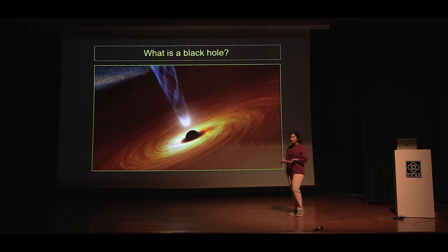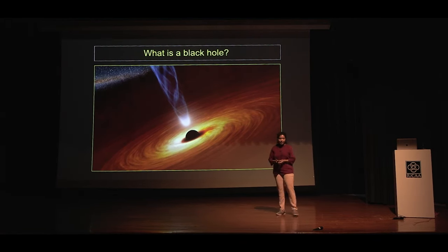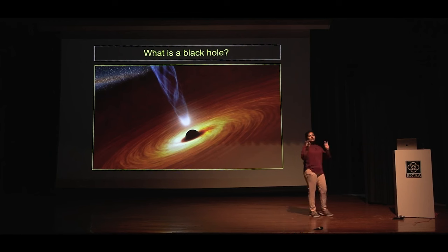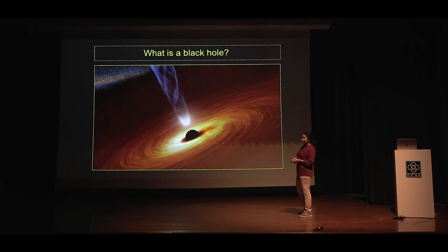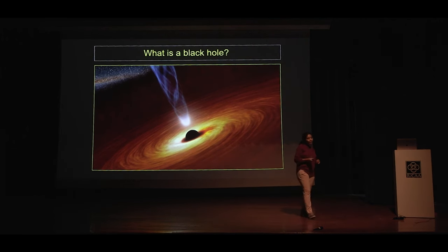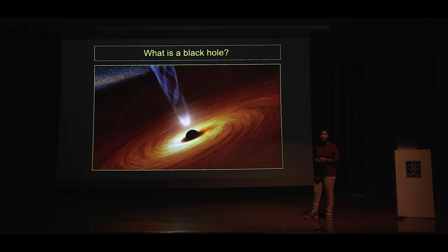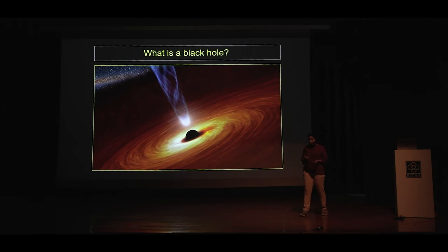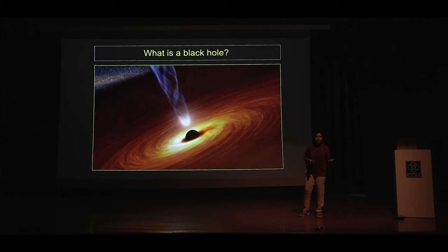To begin with, what is a black hole? A black hole — the definition goes like this: a black hole is a region in space-time where the gravity is so strong that nothing, not even light, can escape it. This is a definition that you will see everywhere.